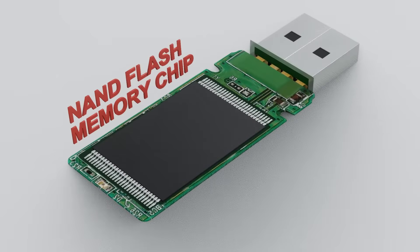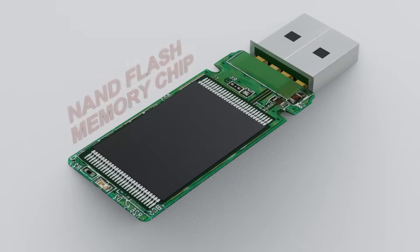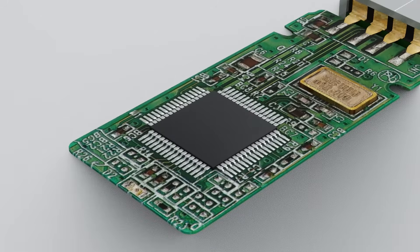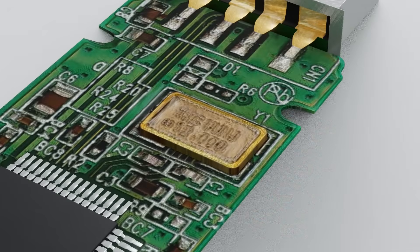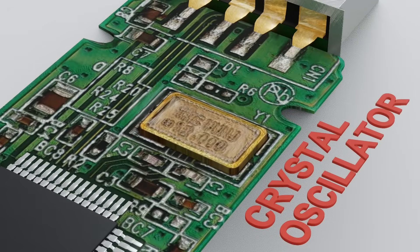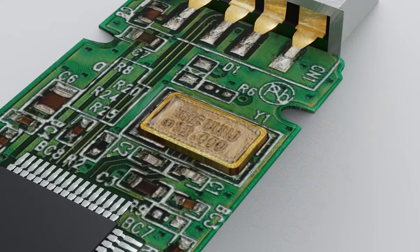NAND flash memory chip. All of your files and data are stored here. Controller chip. This acts as an intermediate to help the USB drive communicate with the device it plugged into. Crystal oscillator. It works like a tiny clock inside a USB drive.